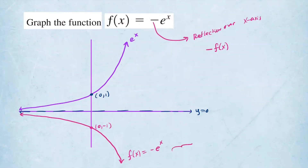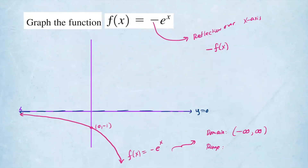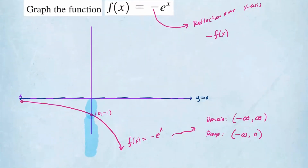Now let's write down the domain of this graph. The domain never changes — it's negative infinity to infinity, because no x value makes this undefined. The range changed: the graph is now facing downward, so the range goes from negative infinity up to the asymptote. The horizontal asymptote is still y equals 0, so the range is negative infinity to 0.